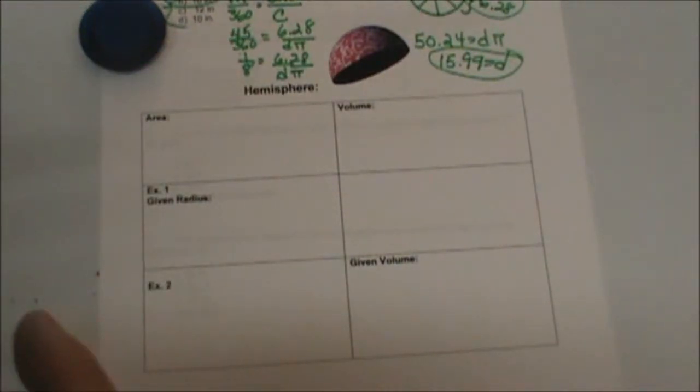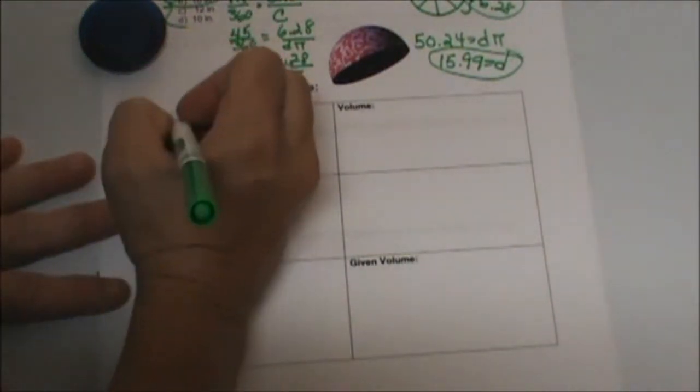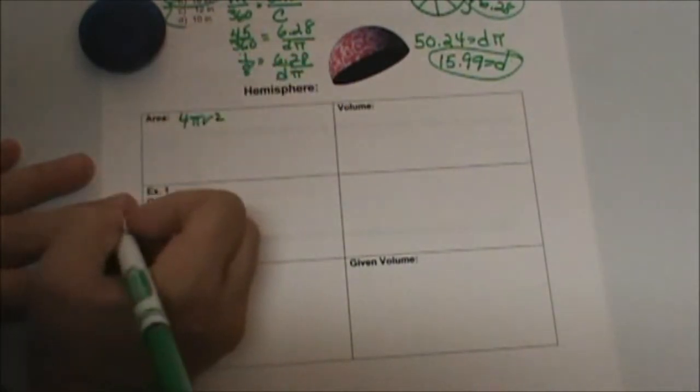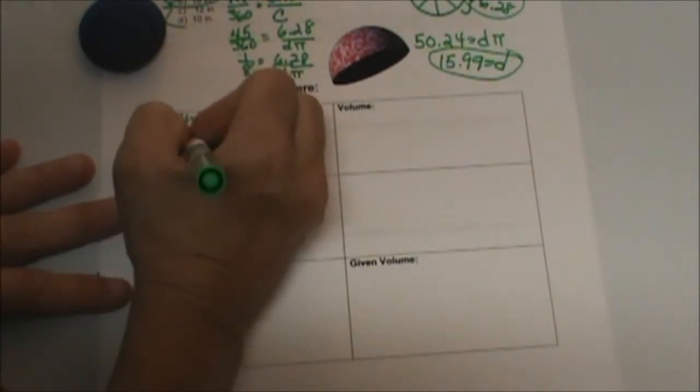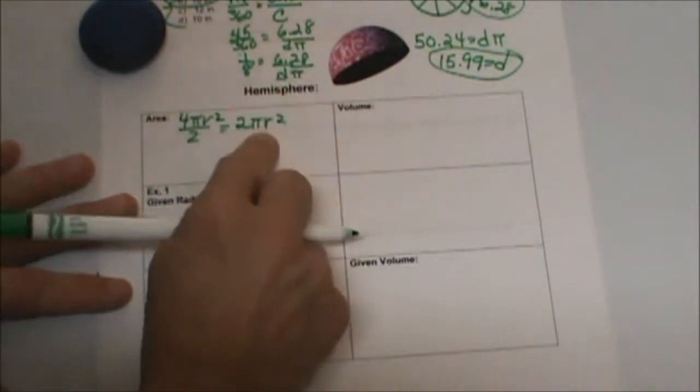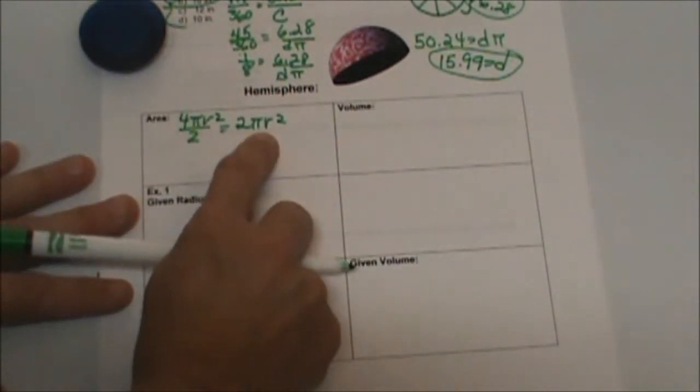Okay, so let's think about this. The area of a sphere is 4 pi r squared. But we want a hemisphere, so we're going to divide that in half. So we've got 2 pi r squared, and that's the curved part of the hemisphere.